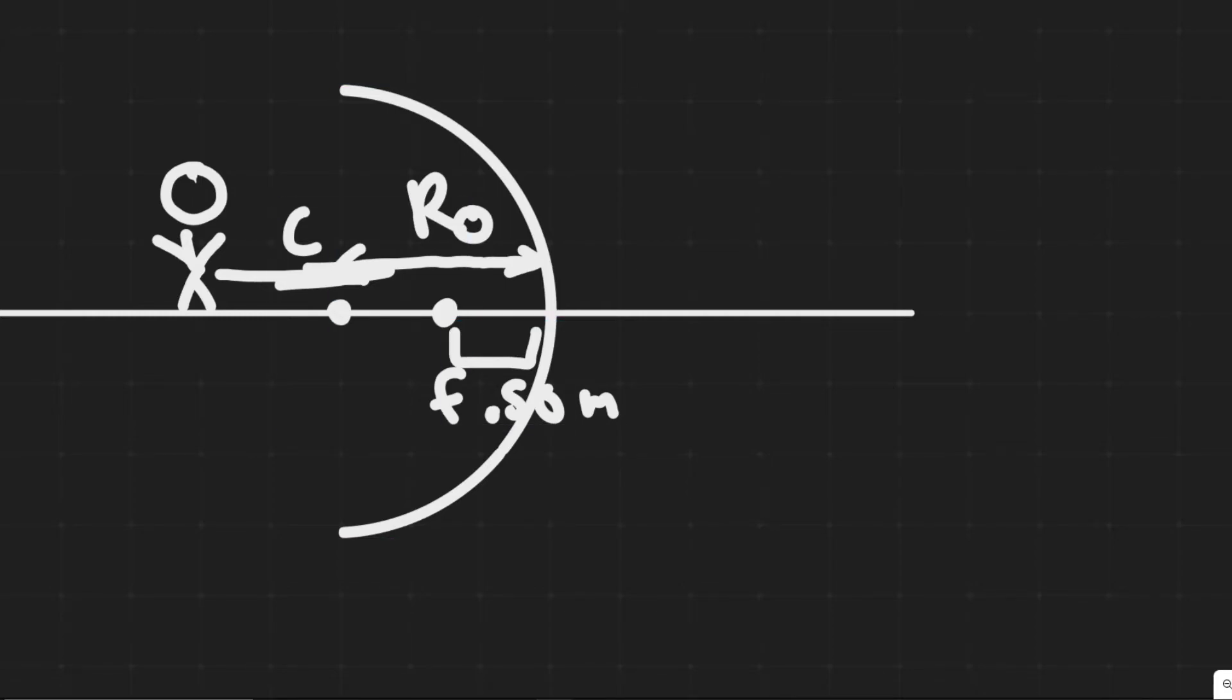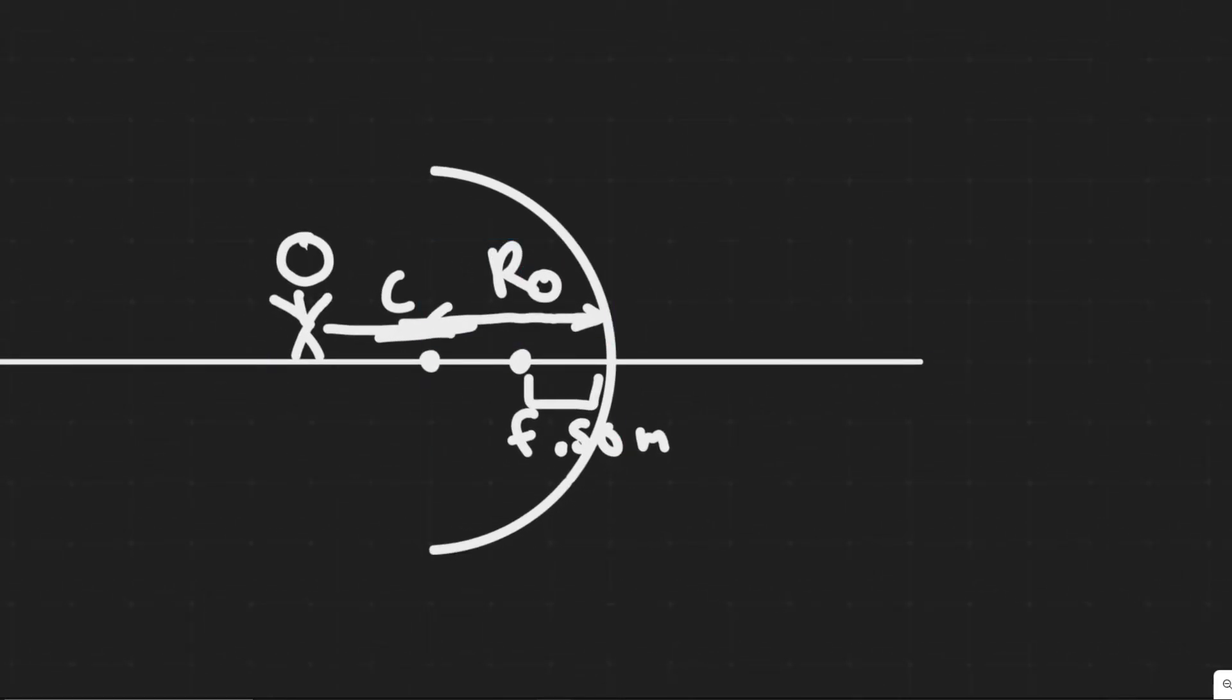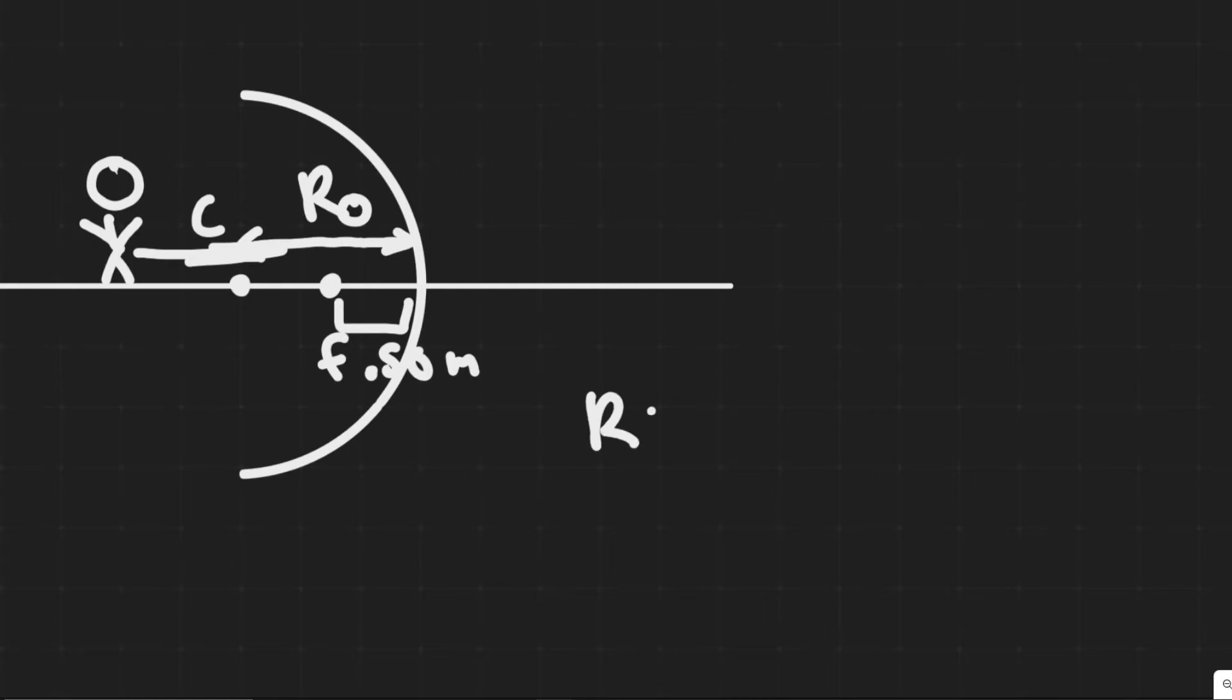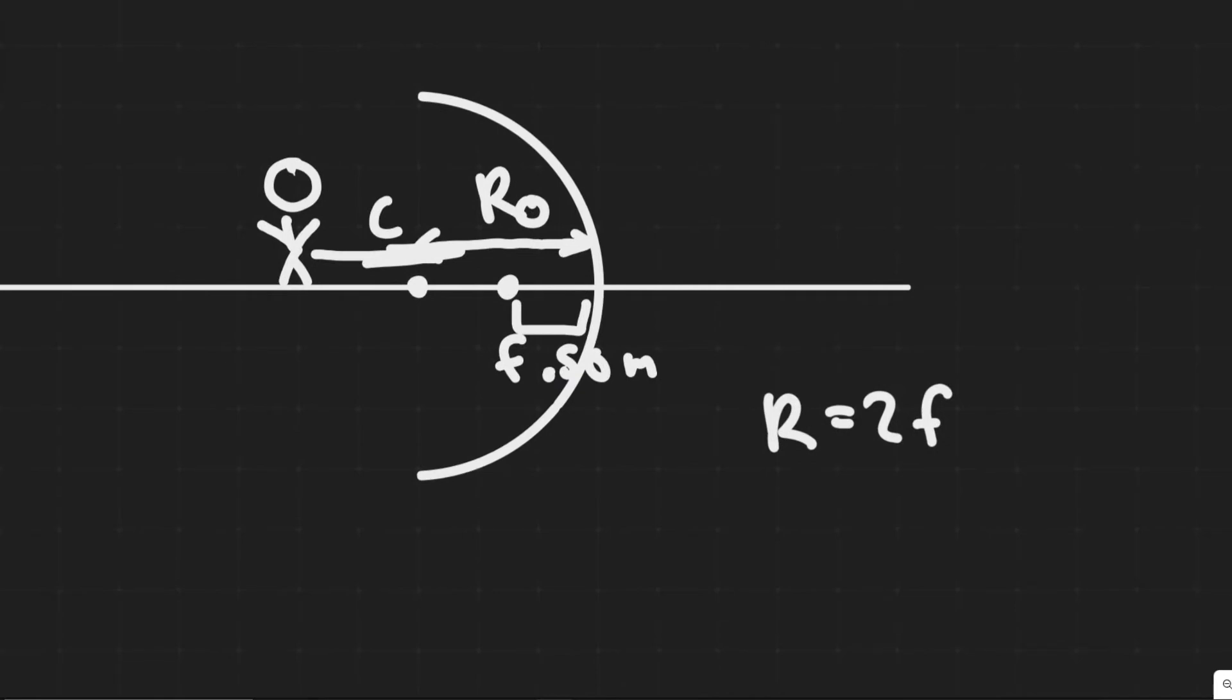To find the radius of curvature, the radius of curvature is equal to two times the focal length, which is the distance from the focal point. If you imagine it just like a circle here, the radius is just the distance from the center of curvature, which is just in the middle.